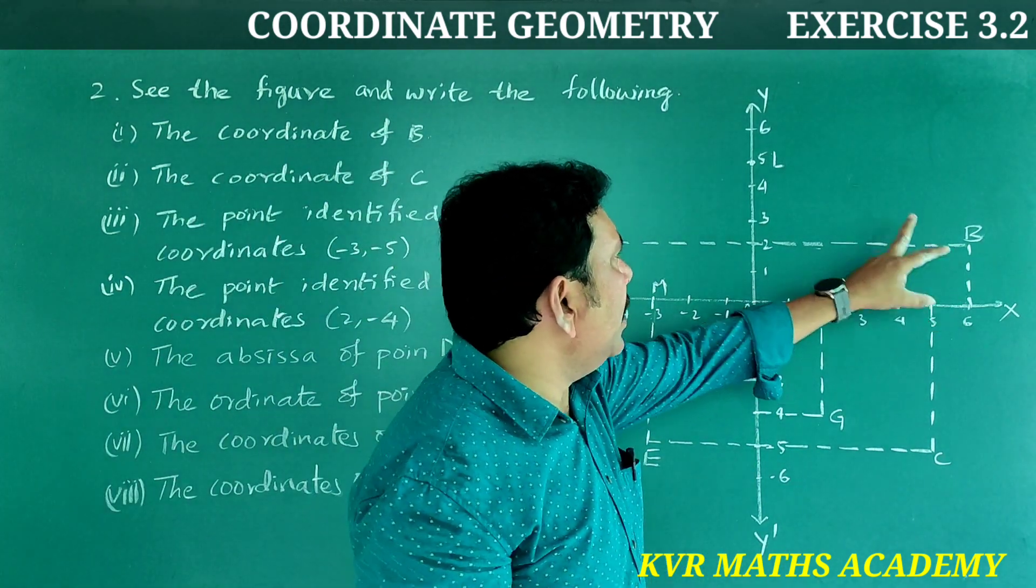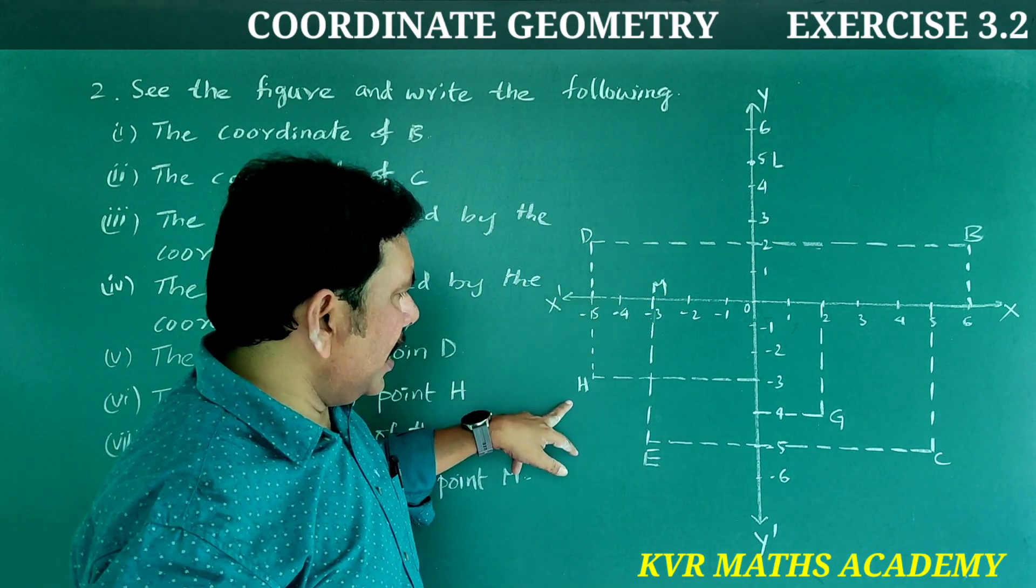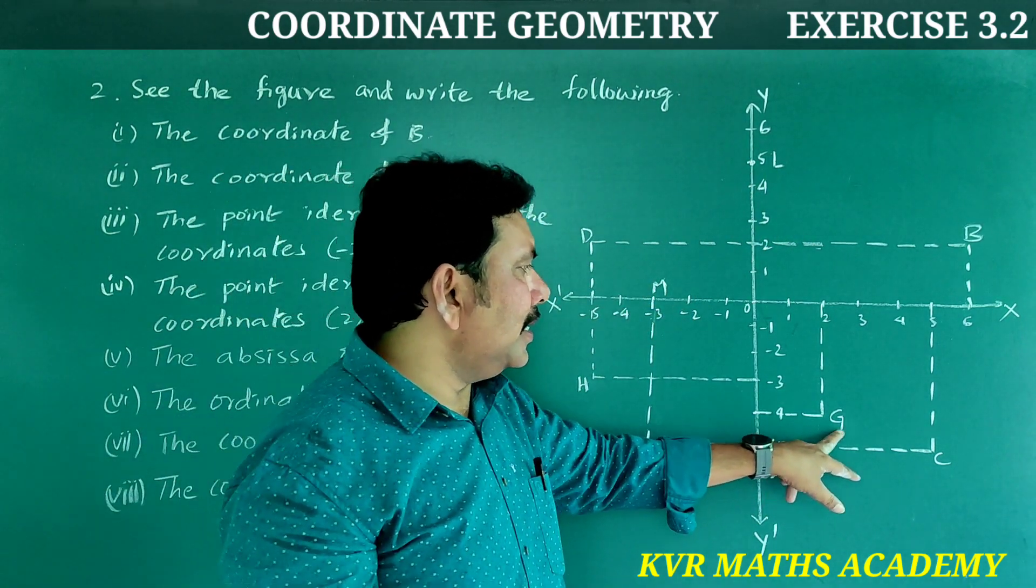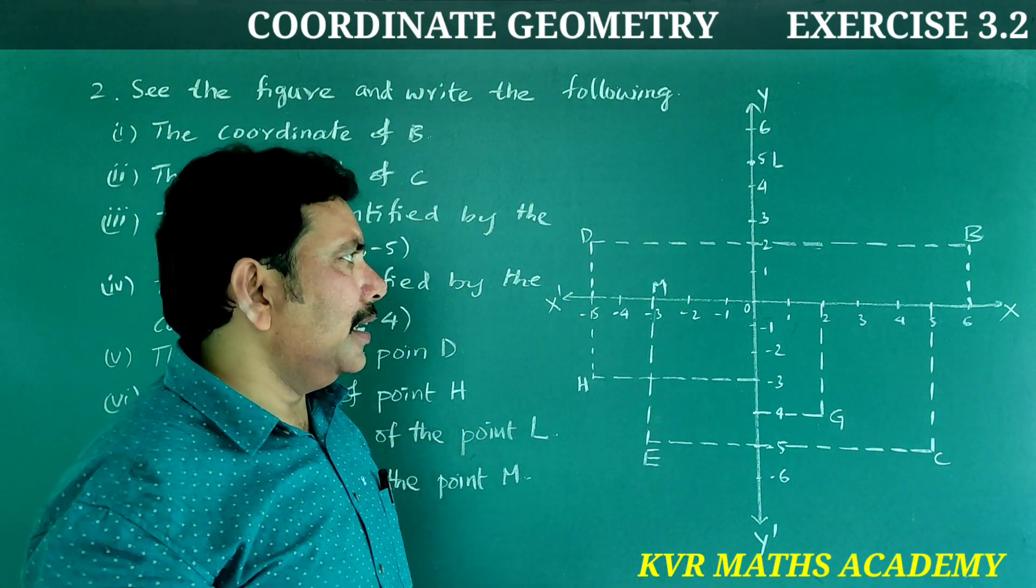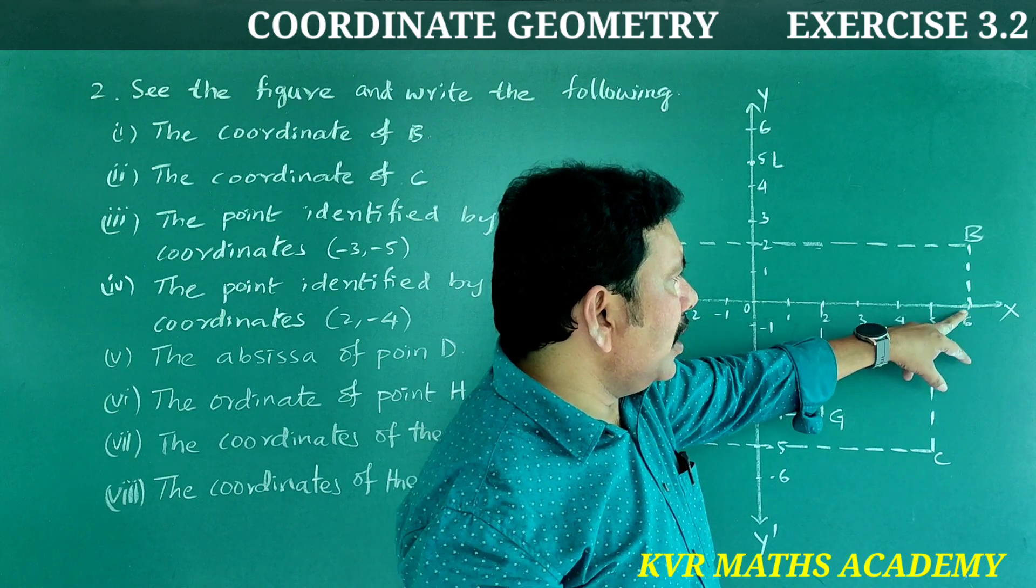Points are marked: B, L, D, M, H, E, G, C. These are the points. Let's find the coordinates.